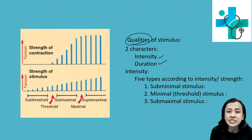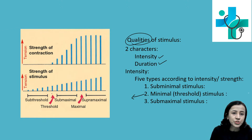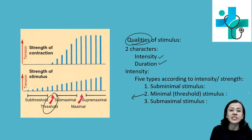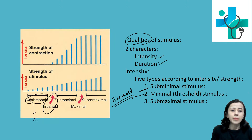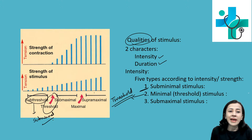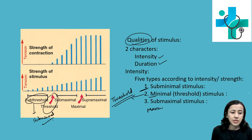First, minimal or threshold stimulus is the minimum stimulus required to stimulate the tissue. When the stimulus is less than the threshold, that is known as subthreshold or subminimal stimulus. Then comes submaximal, which is the stimulus between minimal and maximal.